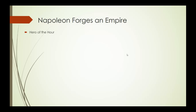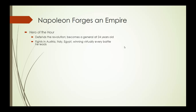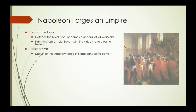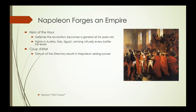Napoleon is one of those figures in history who is enigmatic — very difficult to figure out. He is a supporter of the revolution at first and a hero in France. He rises through the ranks of the French military incredibly quickly, becomes a general at 24 years old. He fights in Austria, Italy, and Egypt defending the armies of the French Revolution. He wins virtually every battle he leads and becomes a national celebrity. In 1799, he returns to France from Egypt and orchestrates a coup d'état. He overthrows the Directory and is installed as the First Consul, immortalized in this incredibly dramatic portrayal.